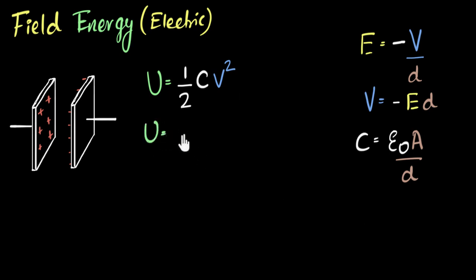What I'll end up with is half C, which is epsilon naught into A divided by d, multiplied by V, which is a potential difference, which I can write as negative E times d. When I square that, the negative sign goes. That's great. So I'll end up with E squared d squared, because I'm squaring it.